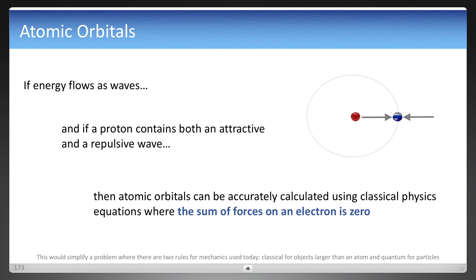Now, if energy flows as waves, and if a proton contains both an attractive and a repulsive wave, then atomic orbitals can be calculated using classical physics, where the sum of forces on an electron is zero.